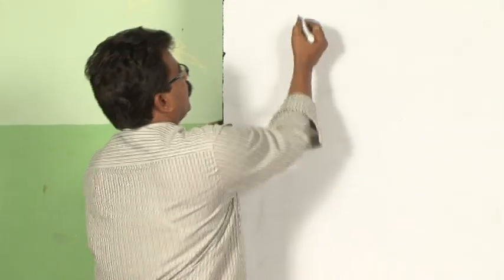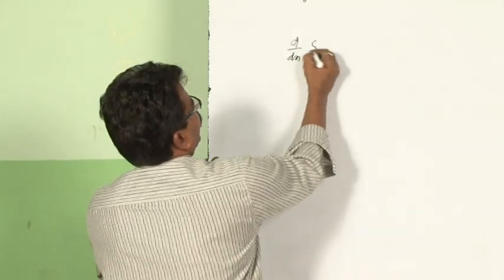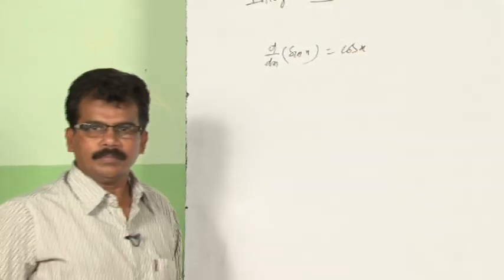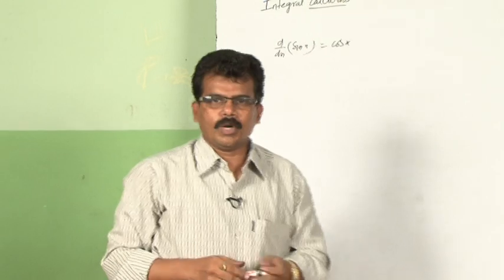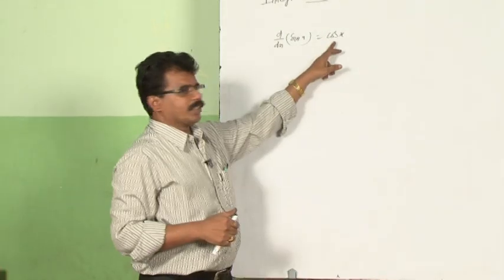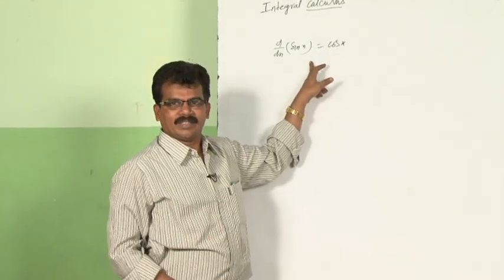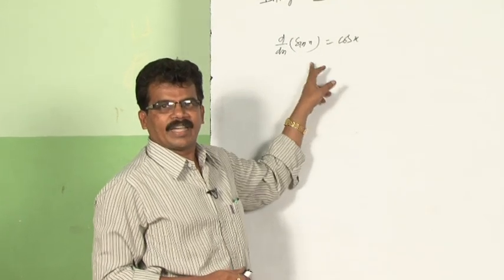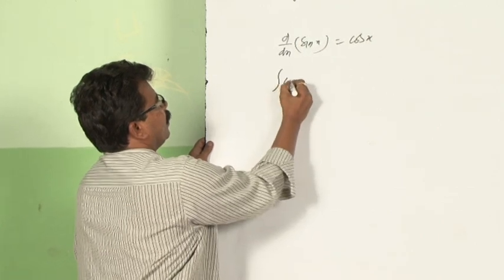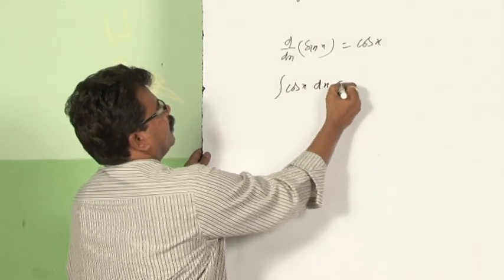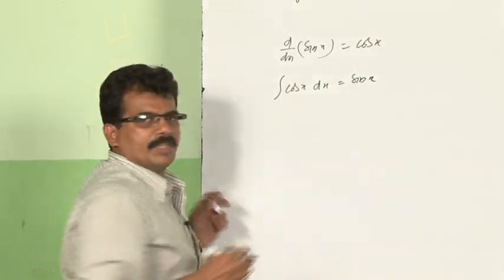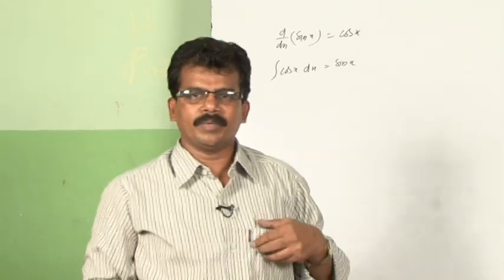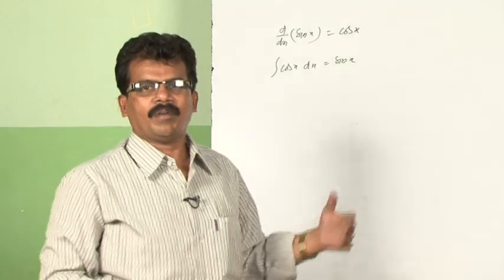We have seen d by dx of sin x is equal to cos x. So what should be done to cos x to get sin x? That means we have to find the anti-derivative of cos x to get sin x. That is written as integral cos x dx is equal to sin x. So sin x is called the anti-derivative or primitive or integral of cos x.